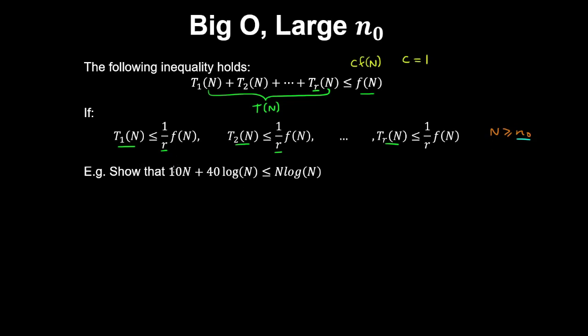Which is best illustrated in an example. So here we're showing T(N) is less than or equal to N log N, or big O of N log N. So therefore the number of terms is 2.